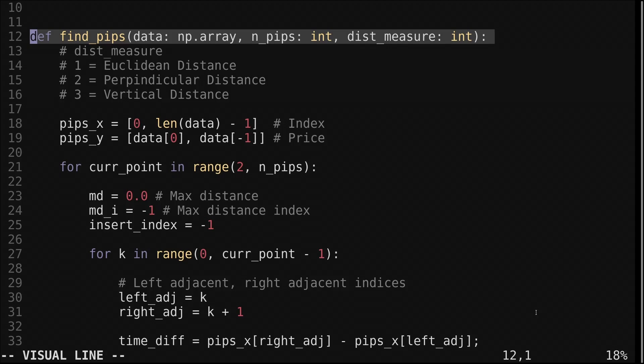Let's look at the code. We implement perceptually important points with this find_pips function. Pips is an acronym for perceptually important points. The function takes an array, the number of pips to find, and the distance measure.